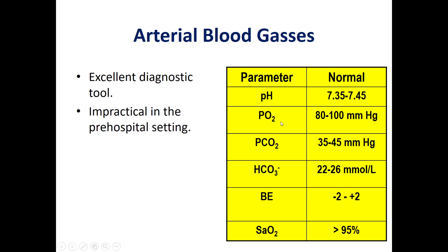We also measure the partial pressure of oxygen available in the plasma. As we said, oxygen exists in our blood in two forms: in the plasma and in the RBC. The partial pressure of oxygen in plasma is between 80 to 100 mmHg, CO2 partial pressure in plasma is 35 to 45 mmHg, and oxygen saturation in the RBC will be greater than 95%. These are values for a normal adult.